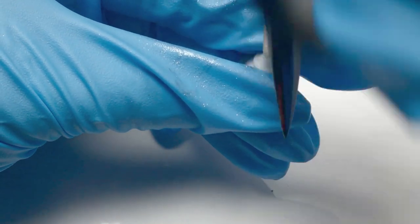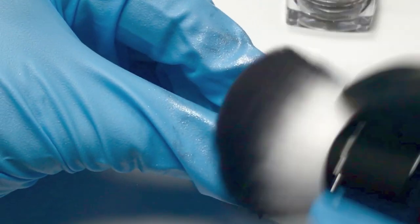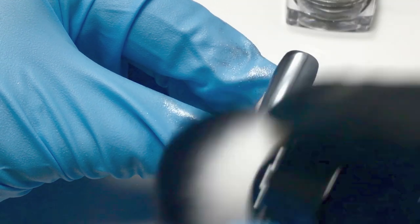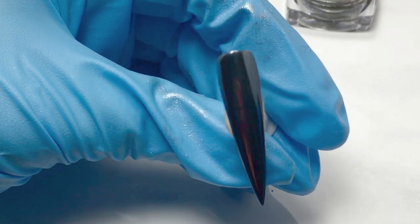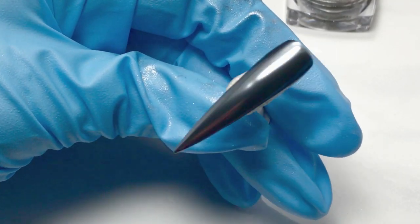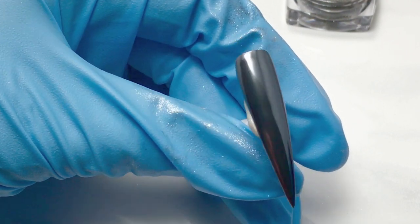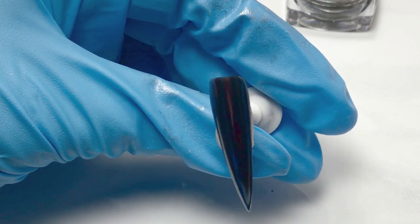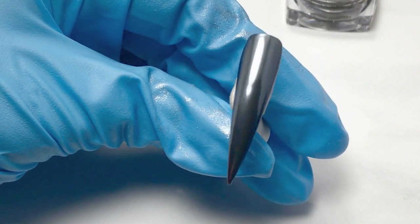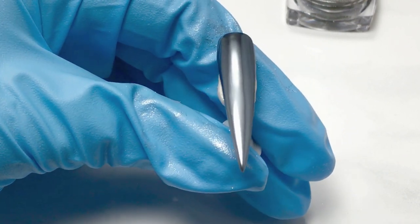And before you topcoat make sure that you dust any of the excess pigment away. You see that glorious glossy mirror gunmetal gray. It's absolutely gorgeous, another fabulous pigment from Social Claws.